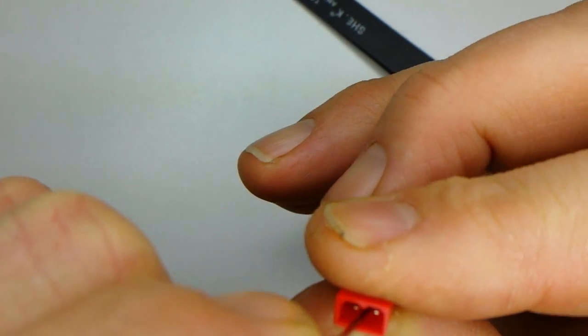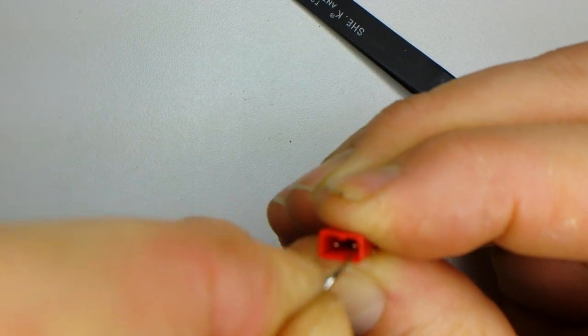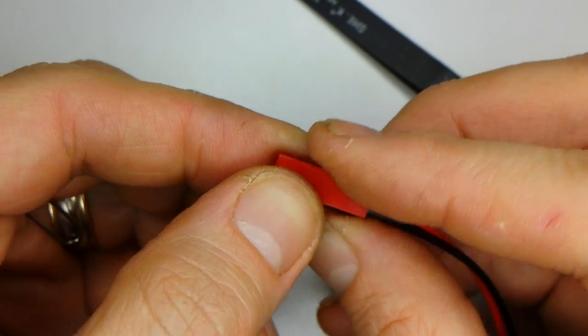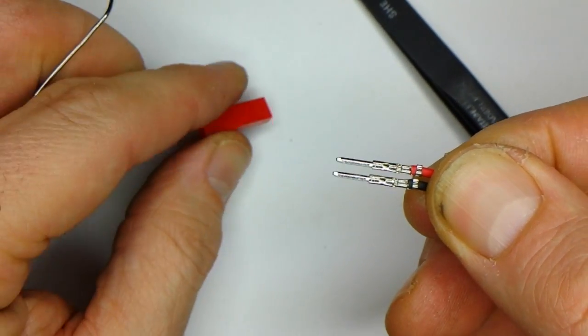You can do the same thing for the other side. Get it underneath, wiggle it in there. You're trying to just flatten out the locking pin. Once those two are flat, you should be able to remove your connectors. Voila!